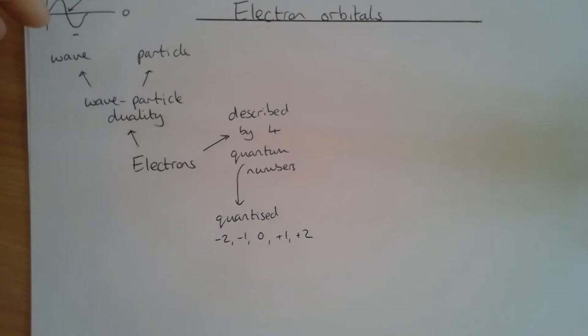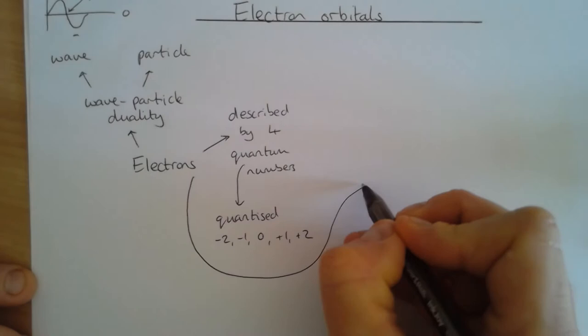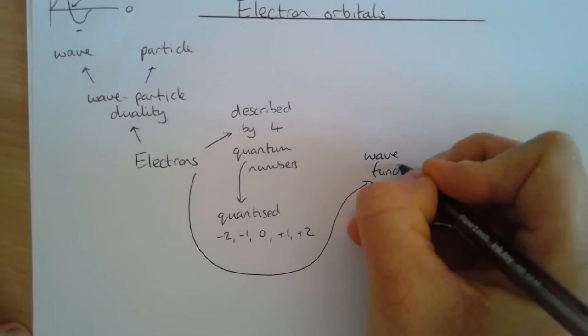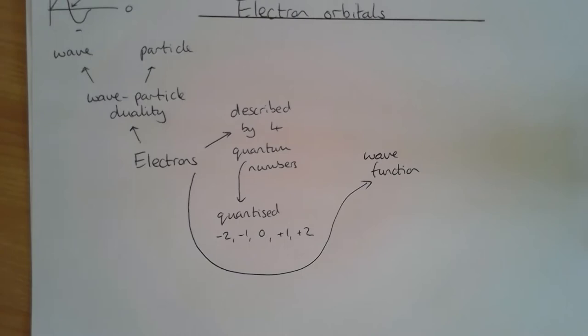Electrons can behave both as a wave and as a particle, and we describe them by four quantum numbers. There's also something called a wave function, which we'll deal with in a moment when we look at all the shapes of orbitals.